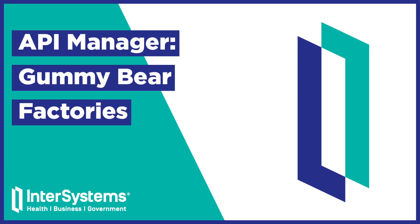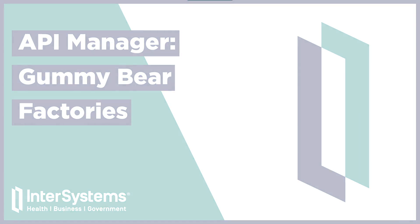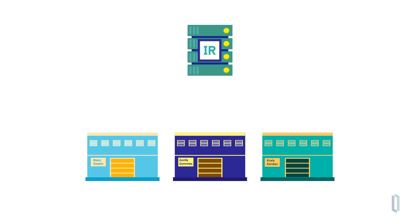In this video, we will take a look at an example environment that uses InterSystems API Manager, or IAM, to monitor and control the HTTP-based API traffic coming from three different gummy bear factories to an endpoint in InterSystems IRIS.